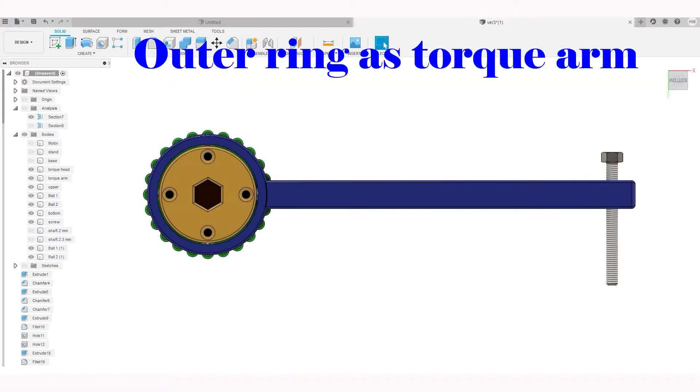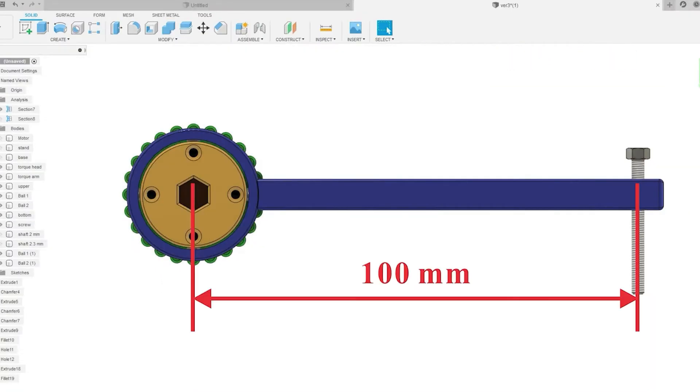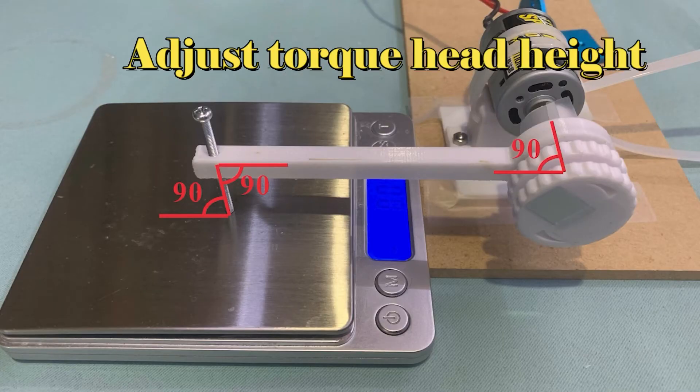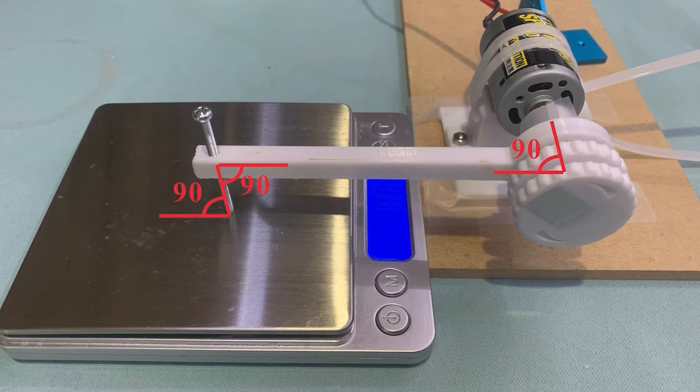The outer ring connects to the torque arm. It is 100 mm in length. You can adjust the torque head height to make sure all constructions are rectangular.